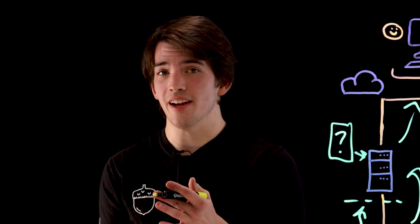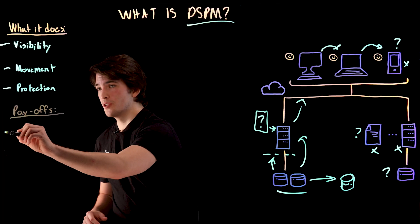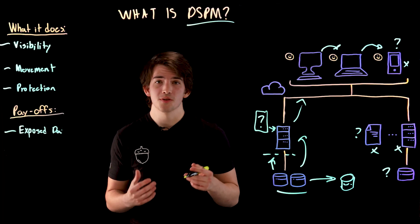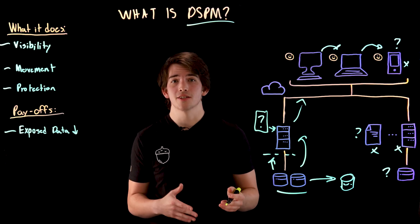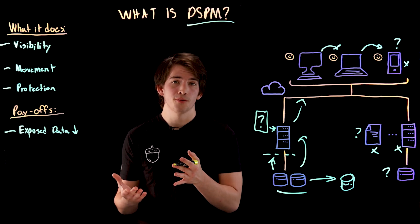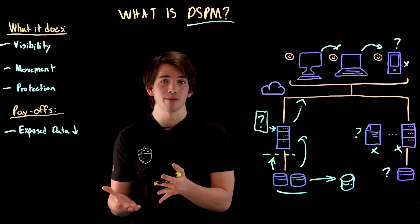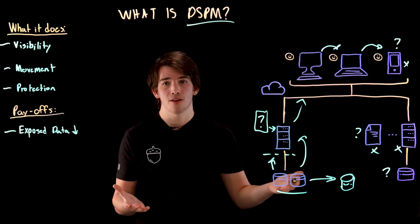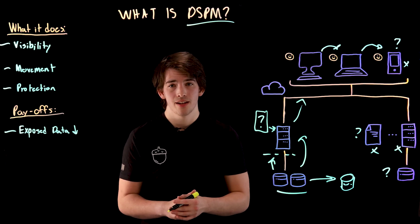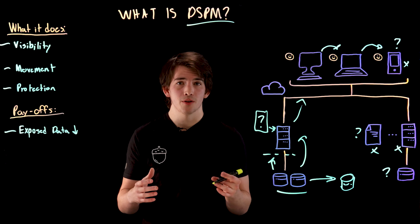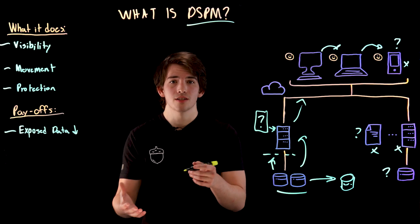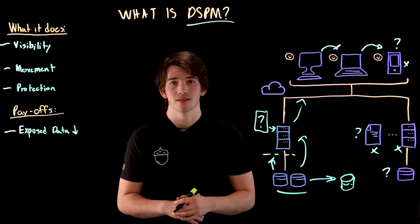DSPM gives you a risk-based prioritization of these vulnerabilities and remediation recommendations. Once we have these three things in place, we can start getting some payoffs. First, reducing exposed data — you can make sure that your data is securely shared with only its intended recipients and inaccessible to unauthorized parties. Then you can remove any sensitive information from your cloud operations or various SaaS applications.